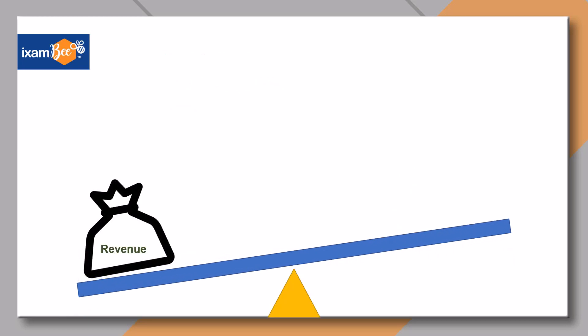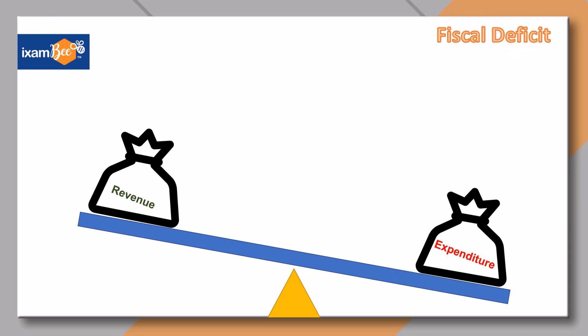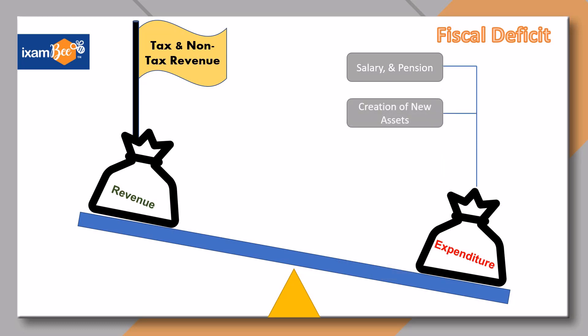Similarly, if we put government's revenue and expenditure on a scale, the difference between the two is fiscal deficit. The revenue side contains both tax and non-tax revenue, and the expenditures include salaries and pensions, creation of new assets, and health and social costs.